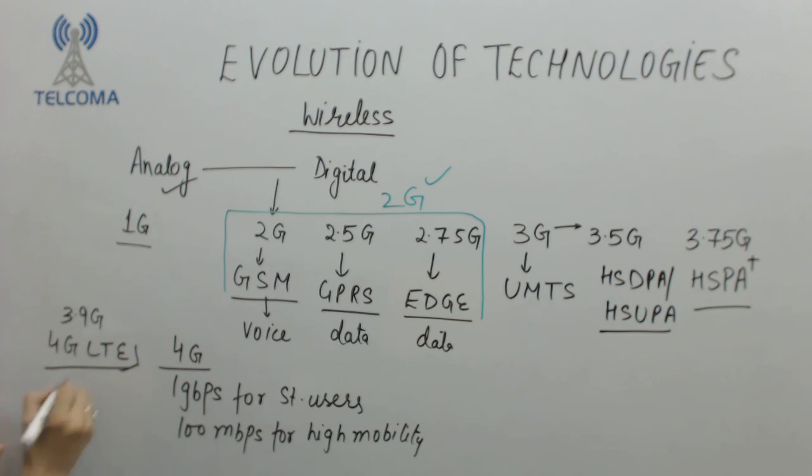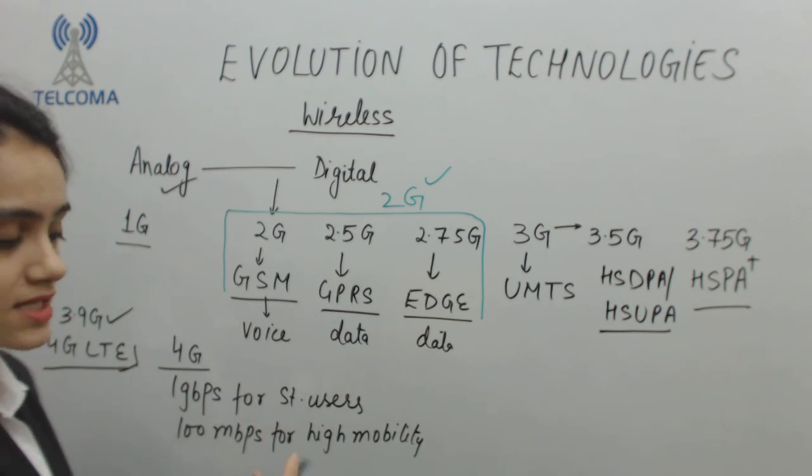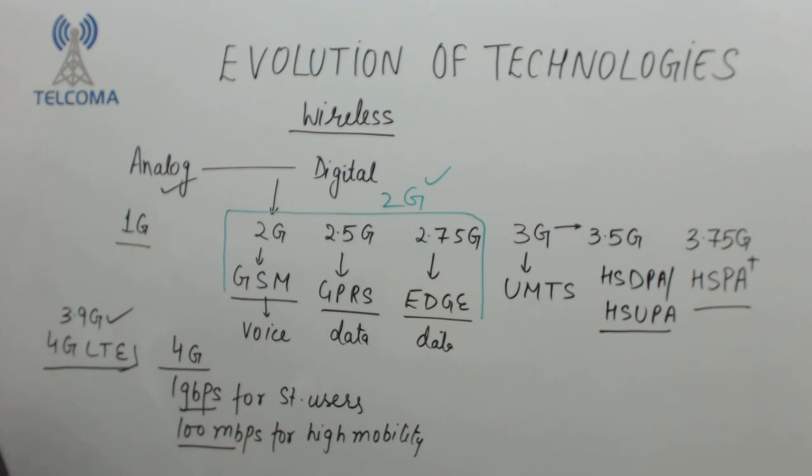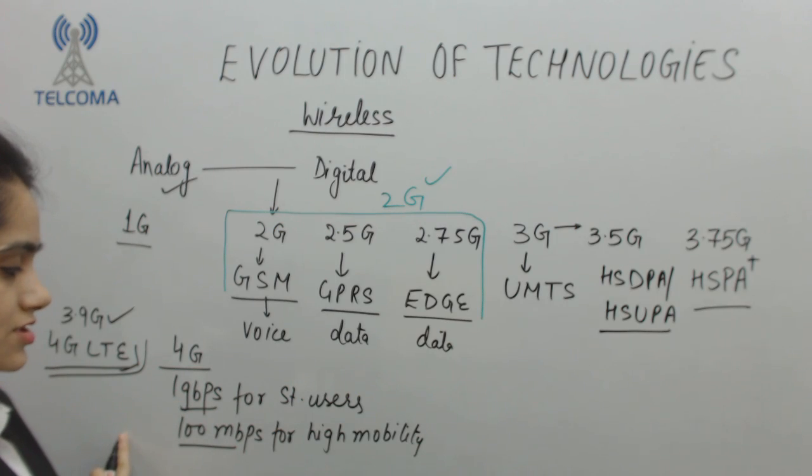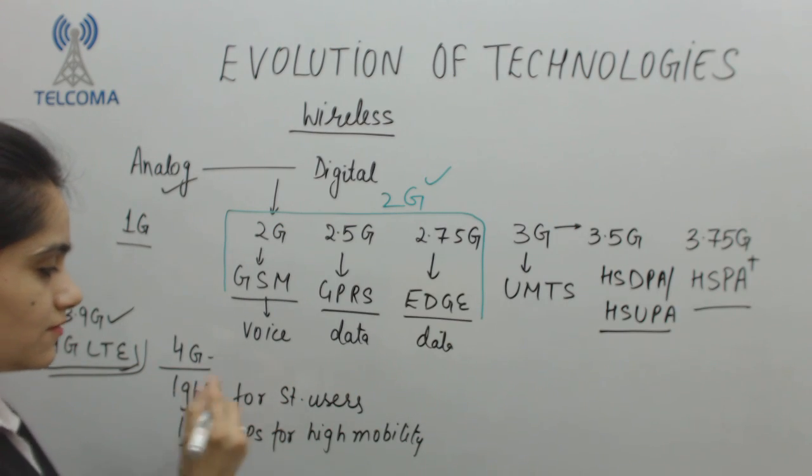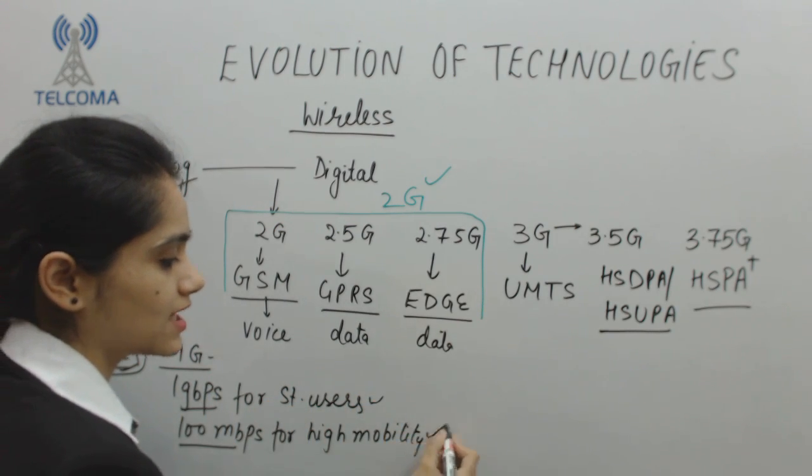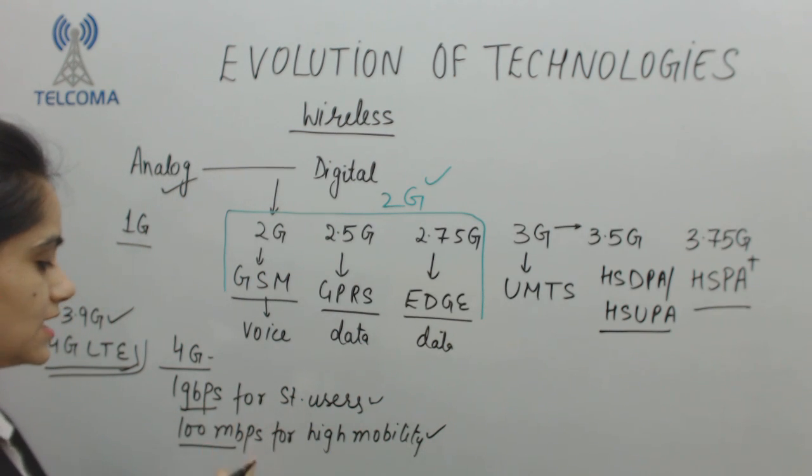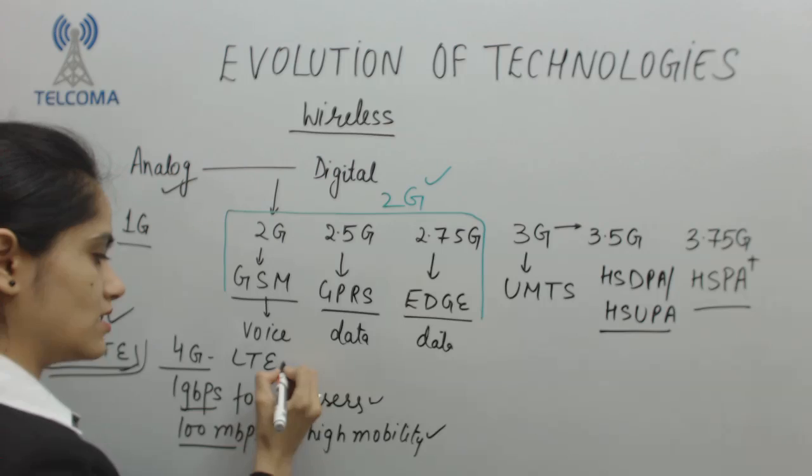Now this is because it is not able to compete with 1 Gbps and 100 Mbps, but we have 4G LTE as the generation. After that we have 4G, then we exceeded, we met the expectations of 1 Gbps and 100 Mbps. So this is my LTE Advanced.